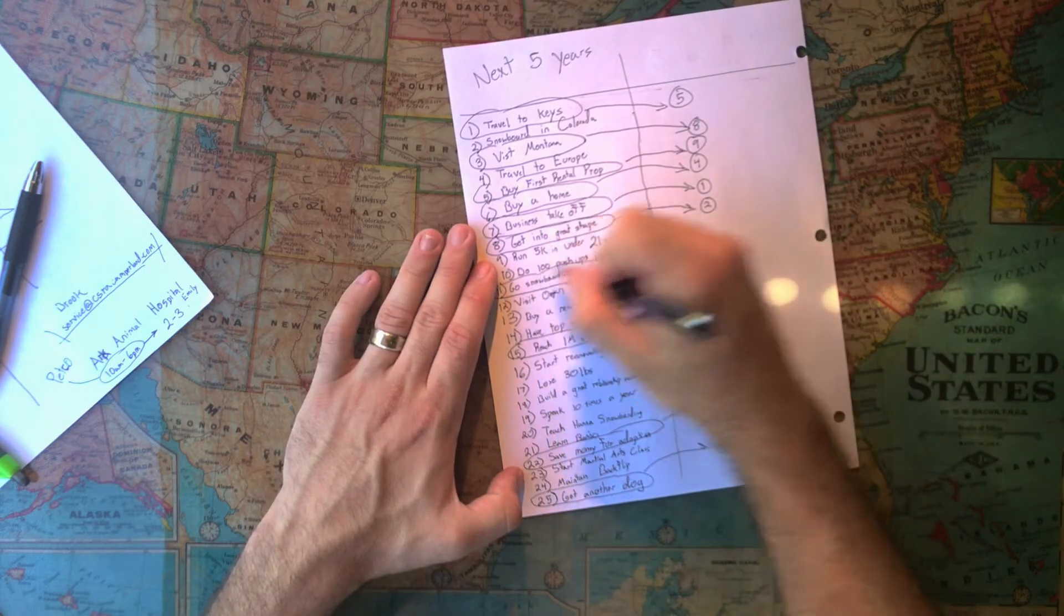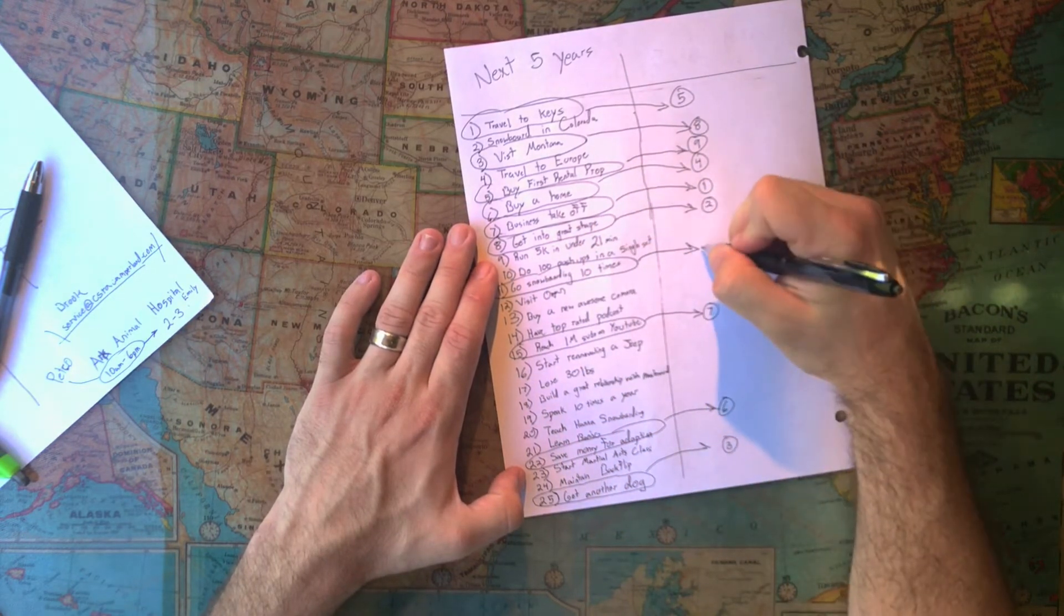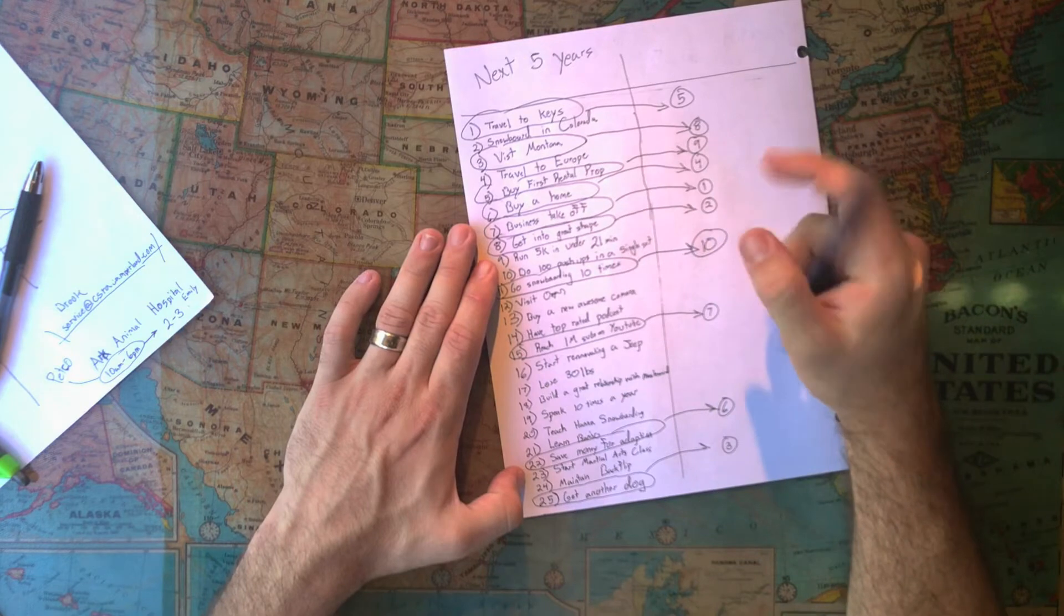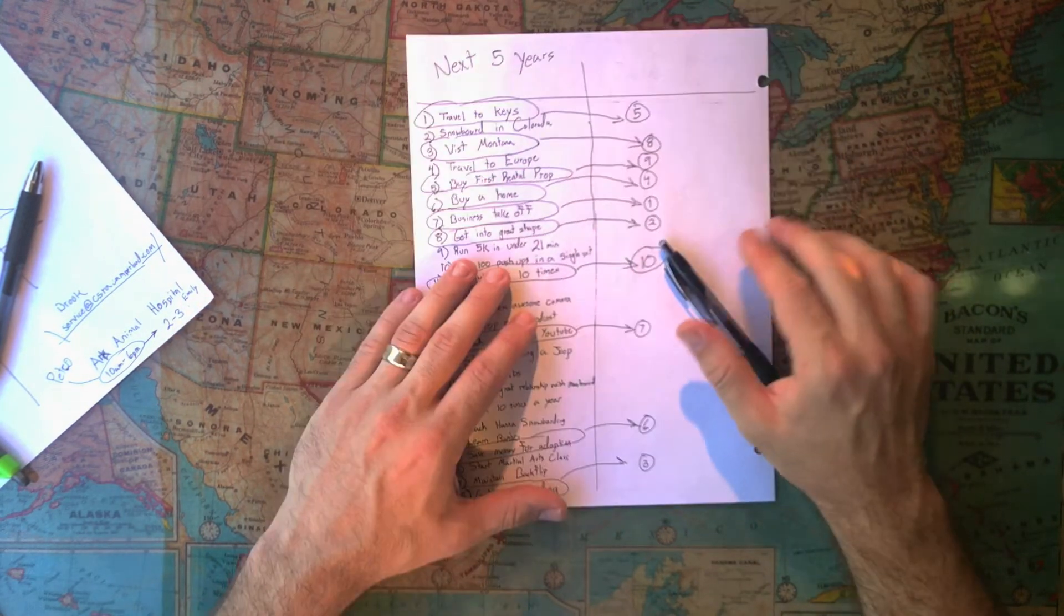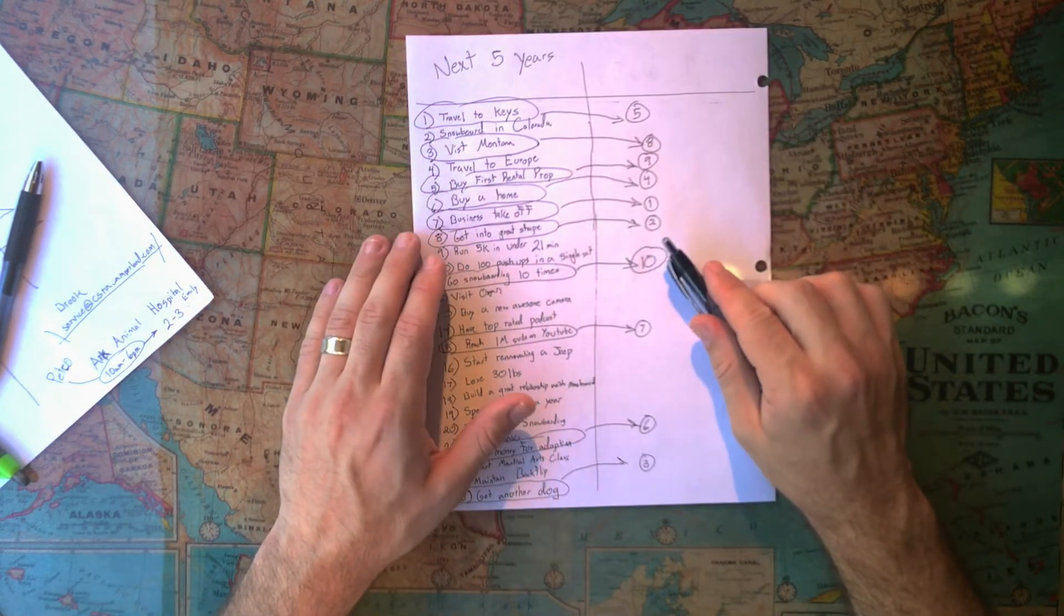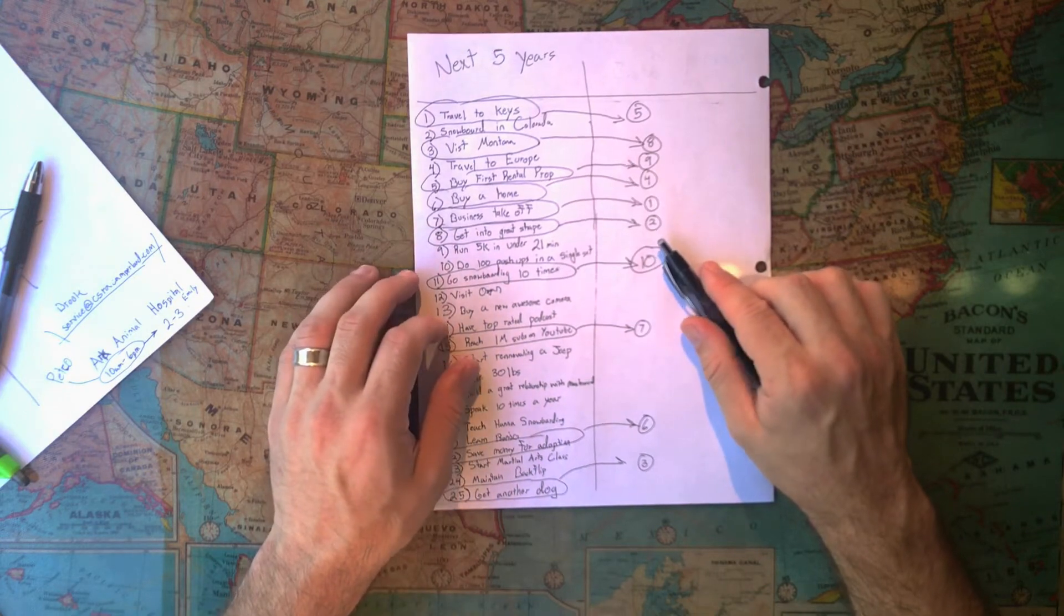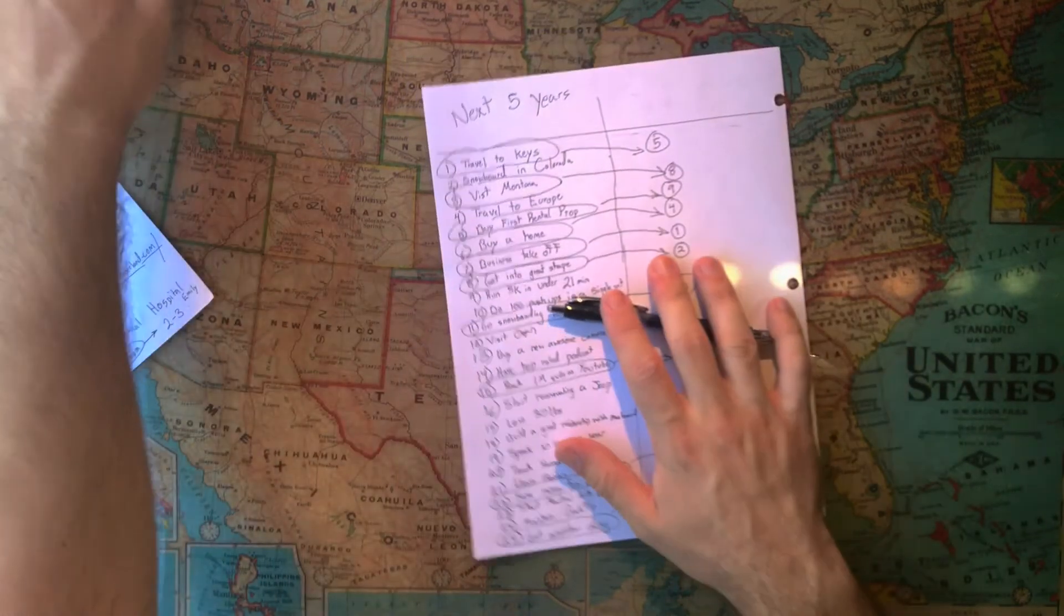Now you have the top 10 things that you want to accomplish over the next five years. For instance, some of mine are travel to the Florida Keys, get into better shape, buy a home, get another dog. Some of these cost a lot of money, some of these cost no money, but it doesn't matter because you're ready for the next step.